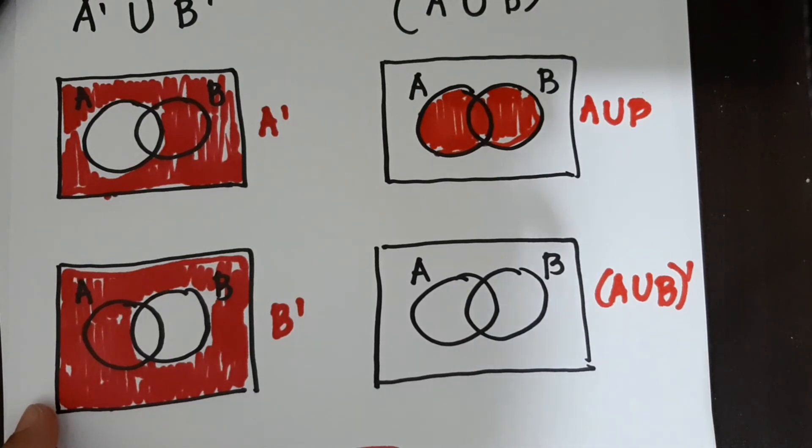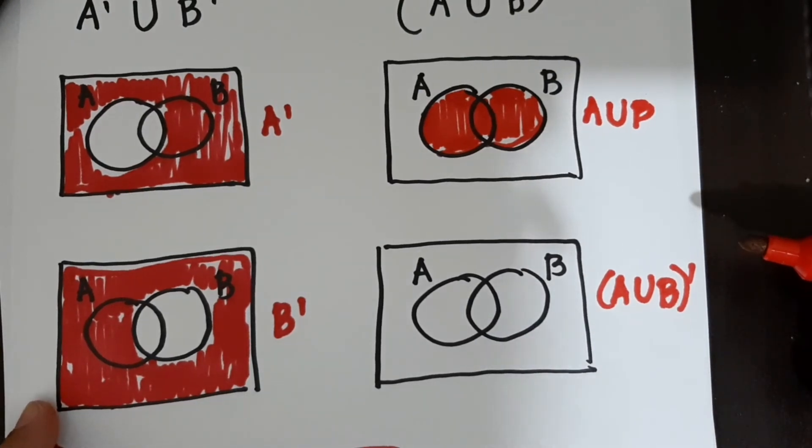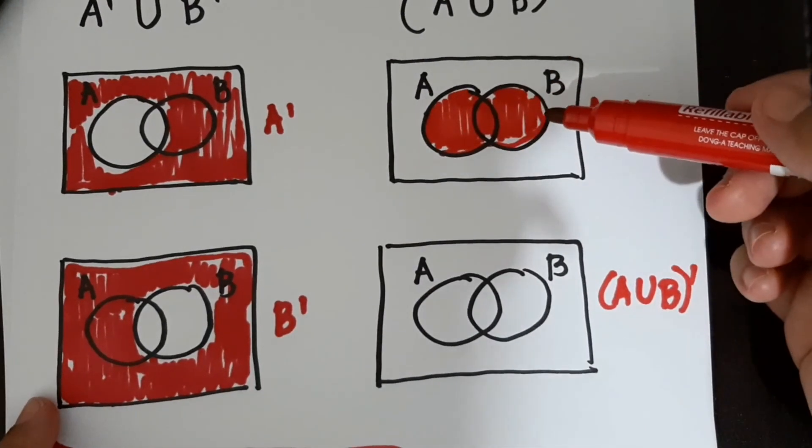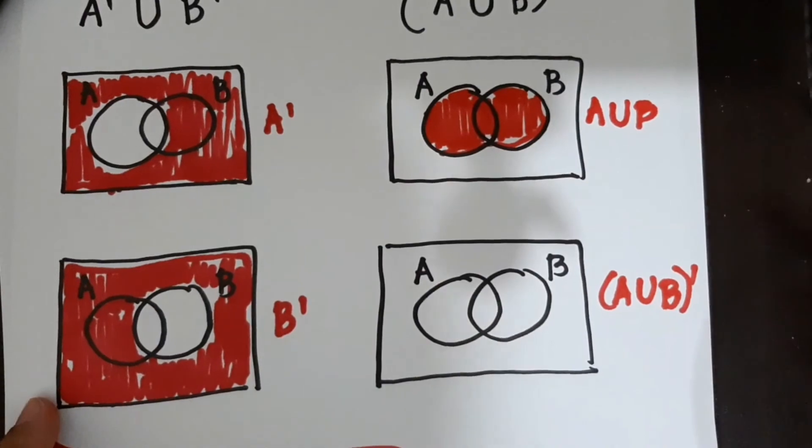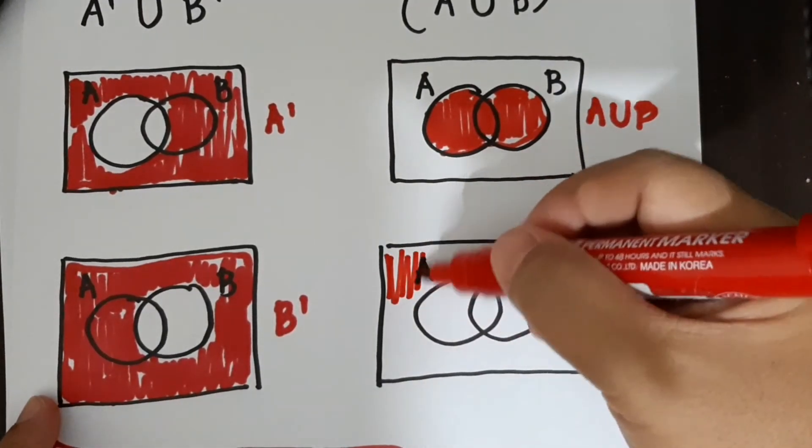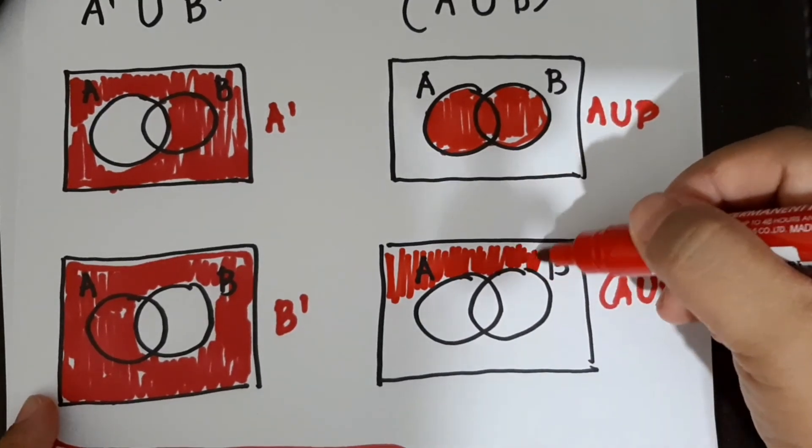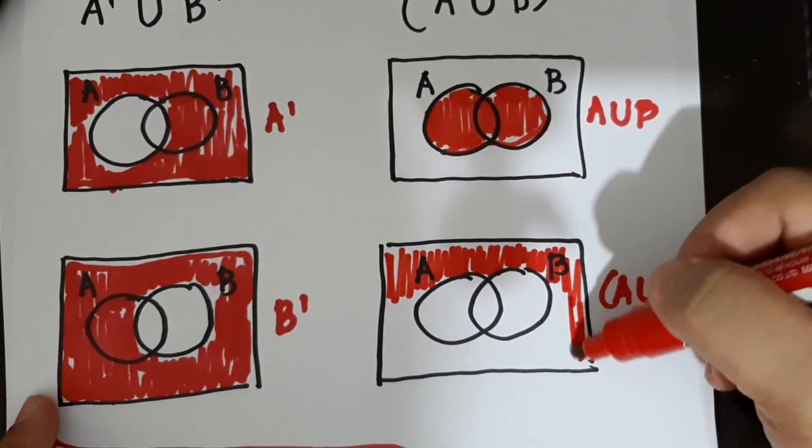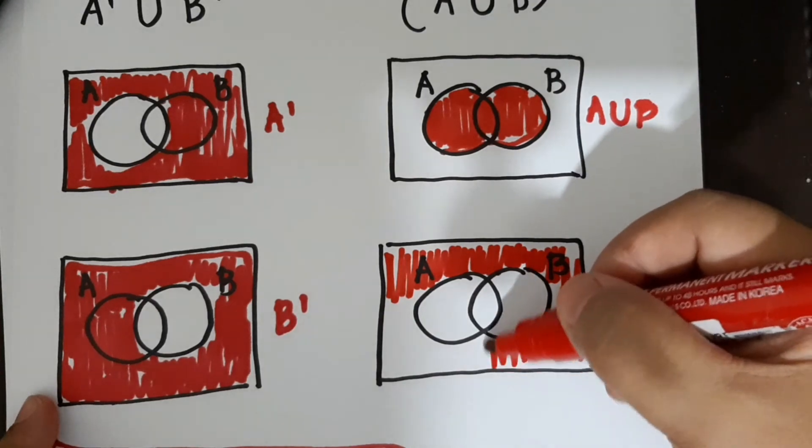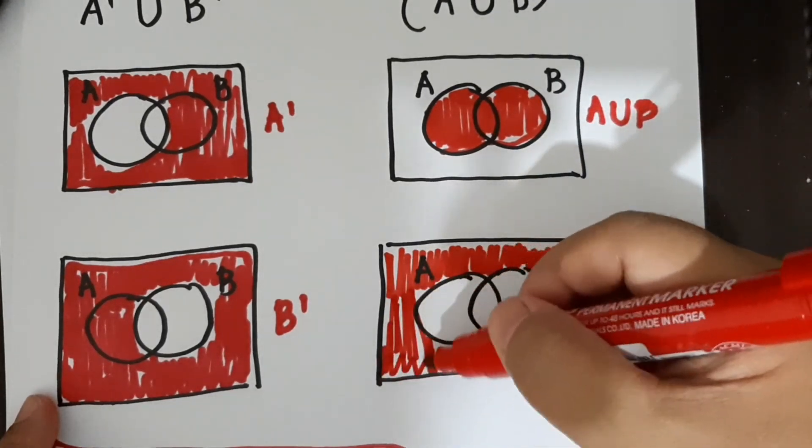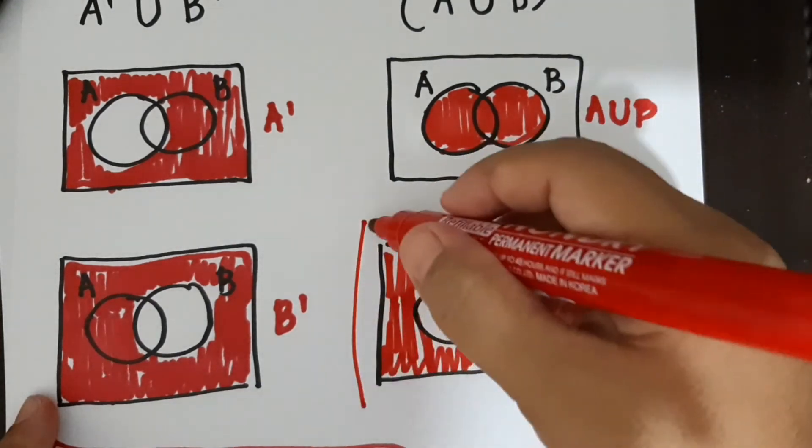So ibig sabihin nun, not A union B. Ibig sabihin, ang hindi lang natin si-shade-an ay yung may mga shade na dito sa una. Kasi not nga eh. Diba? So dapat sila yung walang shade. So that would be your final answer. Thank you.